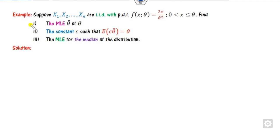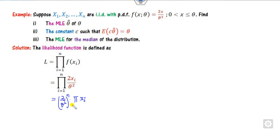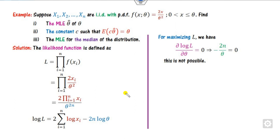Look at the next example. You have to find the MLE, the median, and the expected value for this problem. Start with finding the likelihood function. Substitute the value: 2/theta² is constant, it appears N times, and the product of the Xi's gives a combined expression. You can write this as 2 raised to power N times the product. Taking the logarithm on both sides simplifies the calculation. When you take the derivative to maximize, it is not possible to solve, so we look for the order statistics.